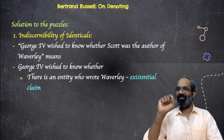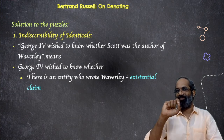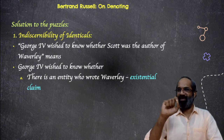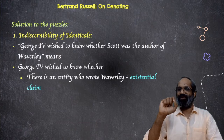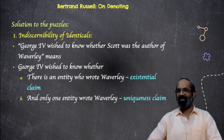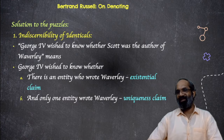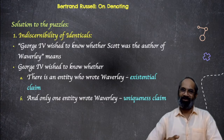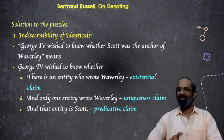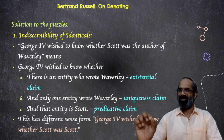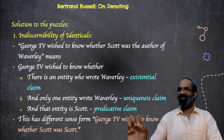The first claim is the existential claim, and the second one is the uniqueness claim. Coming to the first claim, it must assert that there is an entity who wrote Waverly — that is the existential claim. As for the uniqueness claim, it must assert that one and only one entity wrote Waverly. And as a predicative claim, it must claim that that entity is Scott. So the meaning of the statement 'George IV wished to know whether Scott is the author of Waverly' becomes: George IV wished to know whether a person wrote Waverly, and one and only one person wrote Waverly, and that person is Scott.